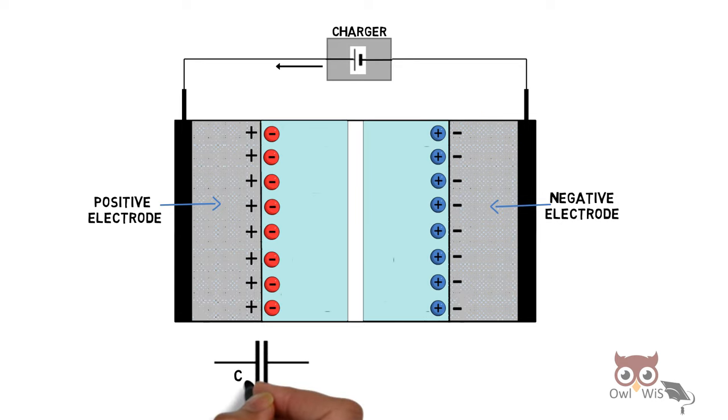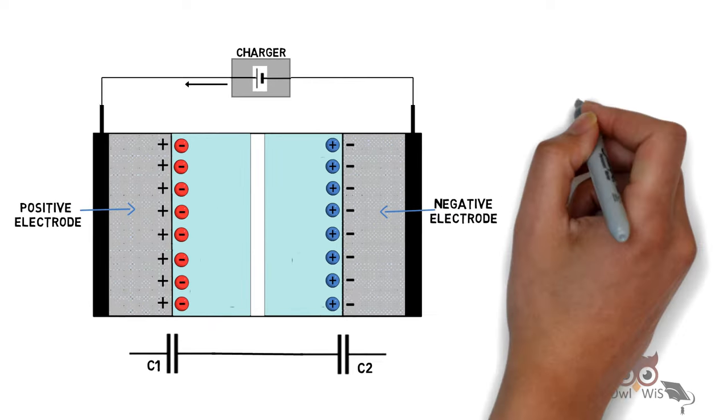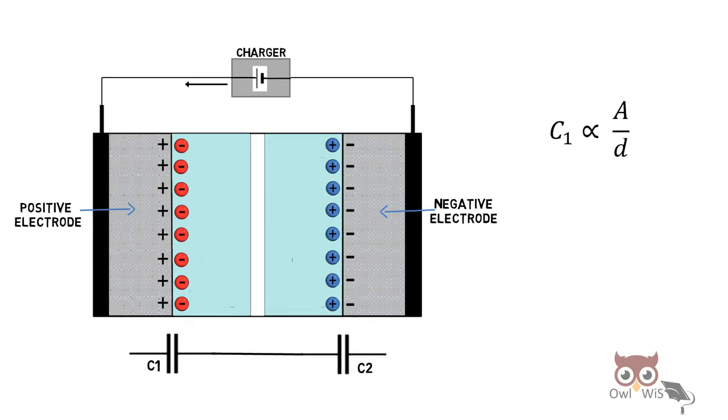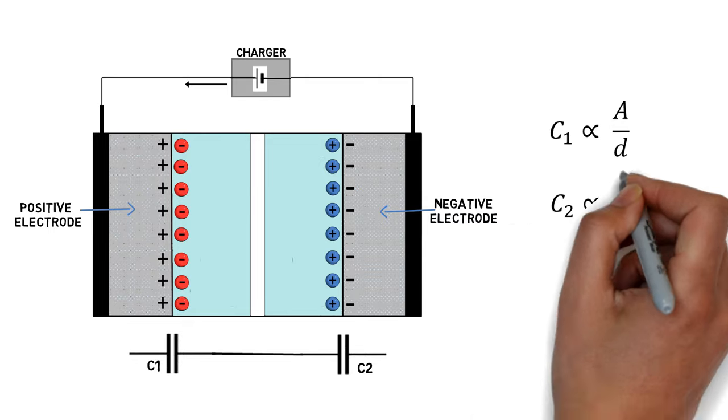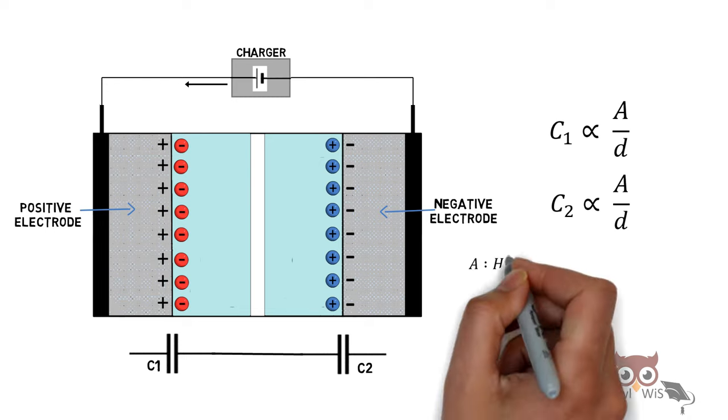The capacitor C1 is formed, along with another capacitor C2, which act as if they are connected in series. Capacitor C1 is proportional to the area A and inversely proportional to the distance d between them, similarly C2.